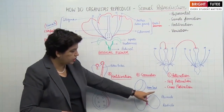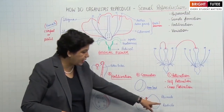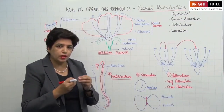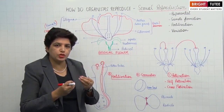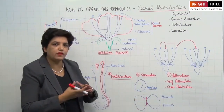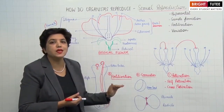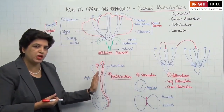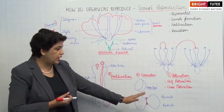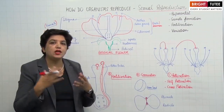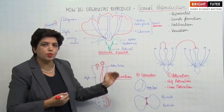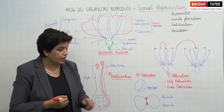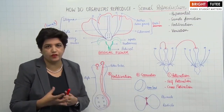The plumule grows into the shoot and the radicle grows into the root. So a seed gives rise to a plumule and radicle which grow into a new plant. This process is germination. So the steps are pollination, fertilization, fruit formation, and lastly germination gives rise to a new plant — this is the mode of sexual reproduction in flowering plants.